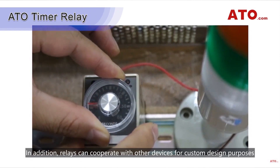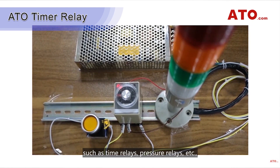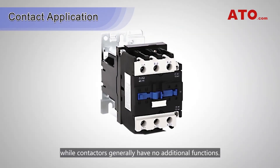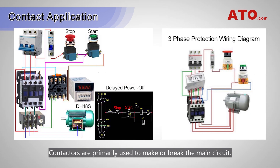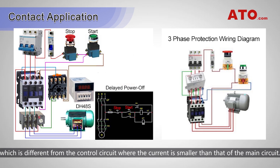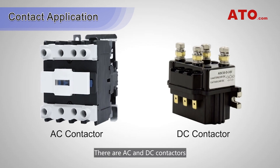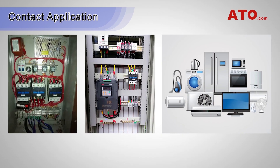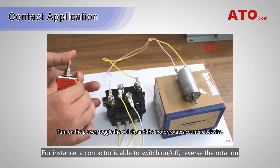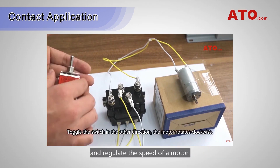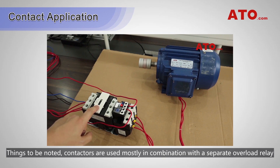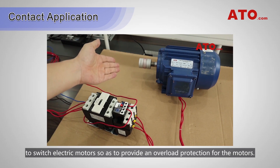In addition, relays can cooperate with other devices for custom design purposes, such as time relays and pressure relays. Contactors, on the other hand, generally have no additional functions and are primarily used to make or break the main circuit. The main circuit works only when it is connected, and carries higher current than the control circuit. There are AC and DC contactors, typically used in electric power, power distribution, and other power consumption situations. For instance, a contactor is able to switch on and off, reverse the rotation, and regulate the speed of a motor. It's worth noting that contactors are mostly used in combination with a separate overload relay to switch electric motors and provide overload protection.